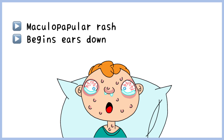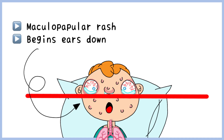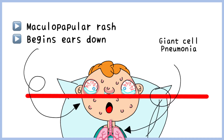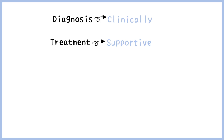The rash first begins from the ears down and spreads through the rest of the body. A complication of this infection is giant cell pneumonia, where large cells called Warthin-Finkeldey cells are observed. Measles is always diagnosed clinically because of its characteristic features, and the condition is usually self-limiting with only supportive care provided.